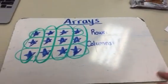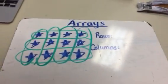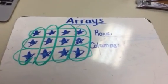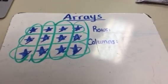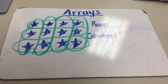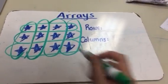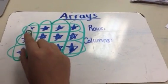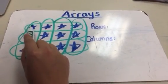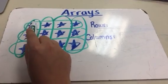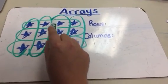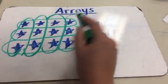If we wanted to write an equation for our rows to find out how many stars I have in this array, then I would see how many I have in each row: 1, 2, 3, 4.